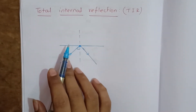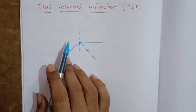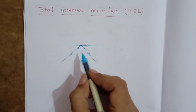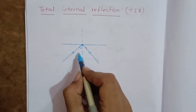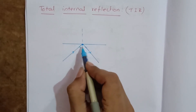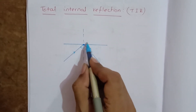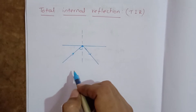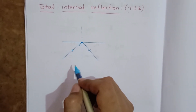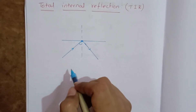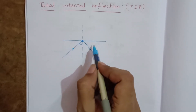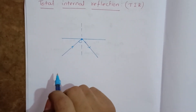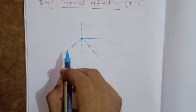Next, total internal reflection. As we saw with the critical angle, when the angle of incidence reaches a particular value, the angle of refraction is 90 degrees. If you still increase the angle of incidence beyond that, the light ray gets reflected back into the denser medium.